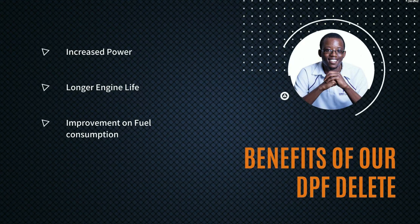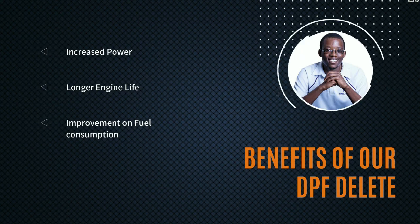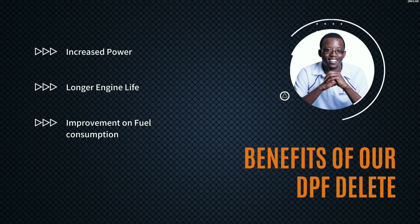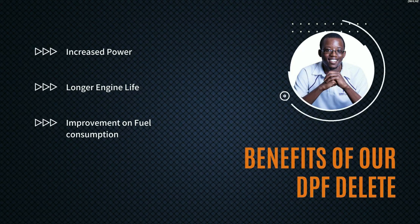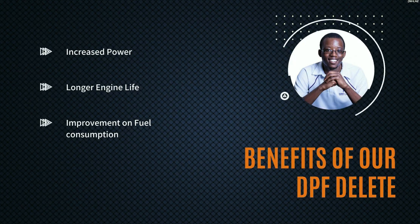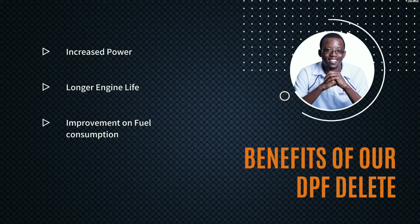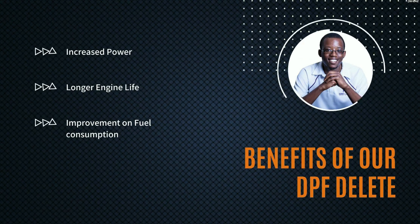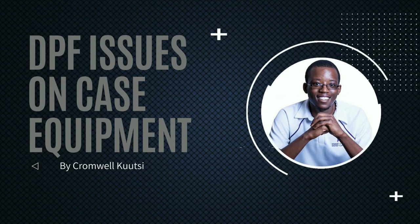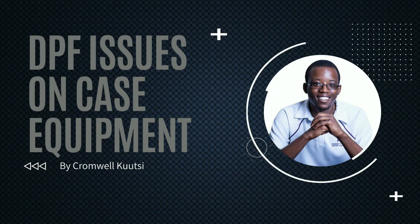In terms of fuel consumption, it will also improve. A vehicle with a DPF system deliberately over-fuels from time to time, because the computer measures the state of the DPF and over-fuels to raise exhaust temperatures. After a DPF delete, the computer no longer looks for the DPF or over-fuels, so you save on fuel. For the AdBlue system, if you calculate all the AdBlue you're buying over a year, converting to non-AdBlue eliminates that cost entirely — that's a huge saving.